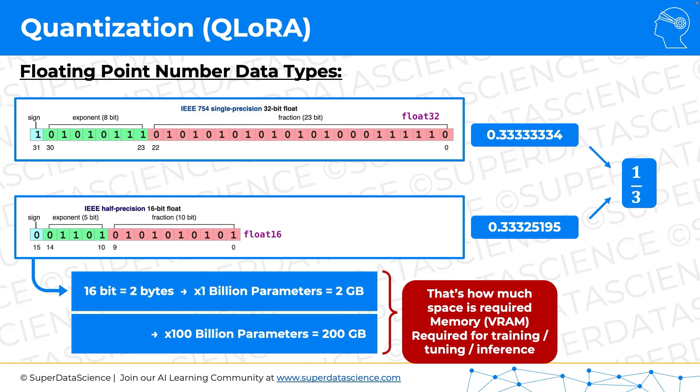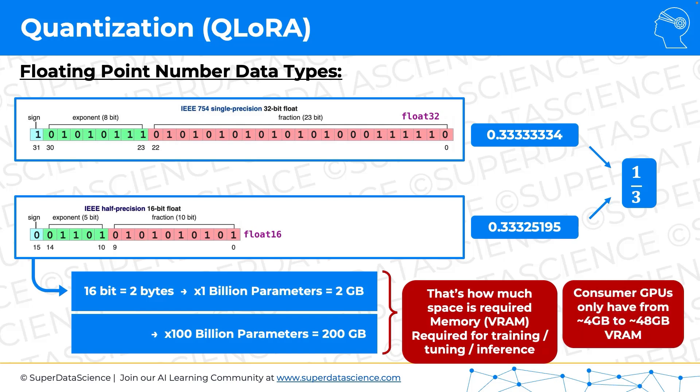GPU memory is quite limited. For example, consumer GPUs don't have that much, and as of today they're between 4 and 48 gigabytes of VRAM. If the model requires 200 gigabytes, that becomes very hard for consumers, and even for businesses that's a lot of GPU memory required. So how can we optimize this?